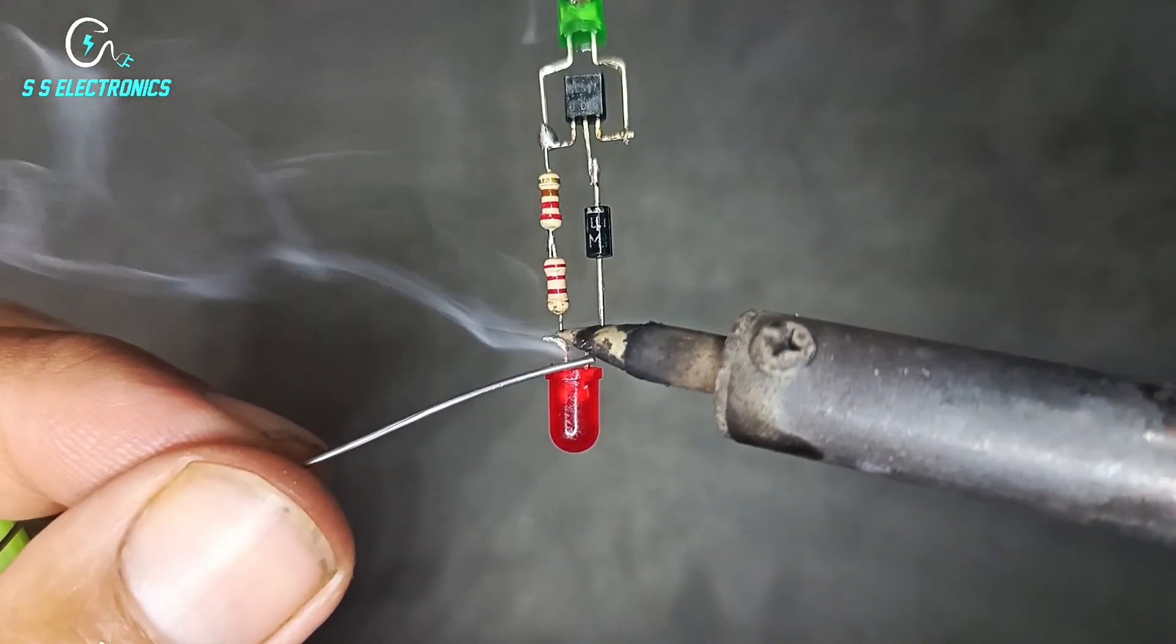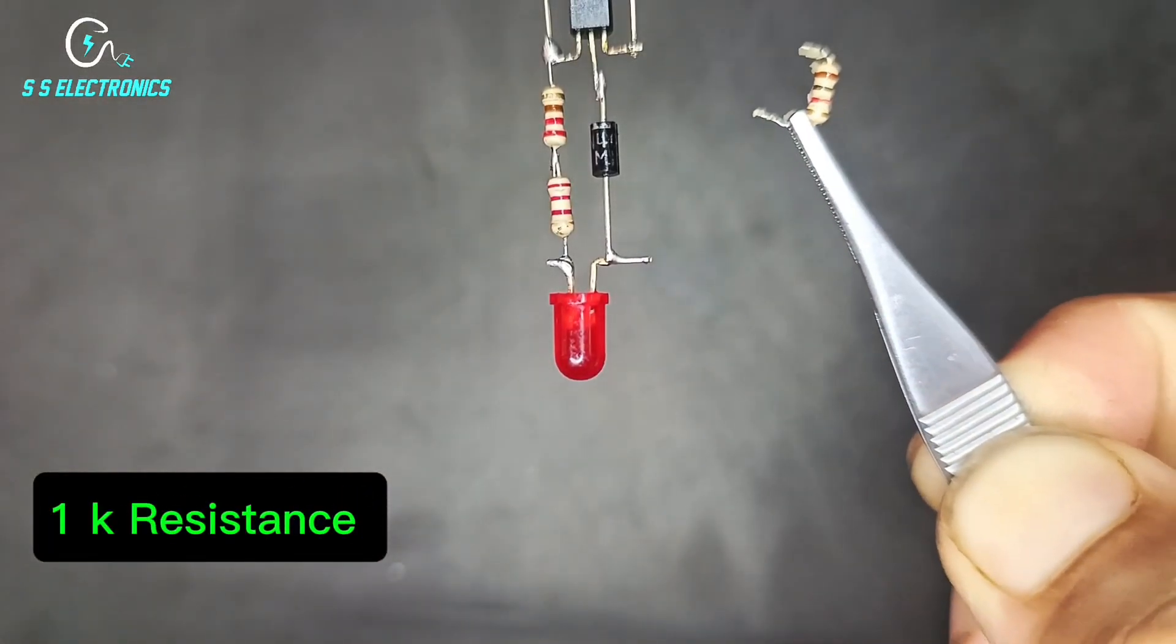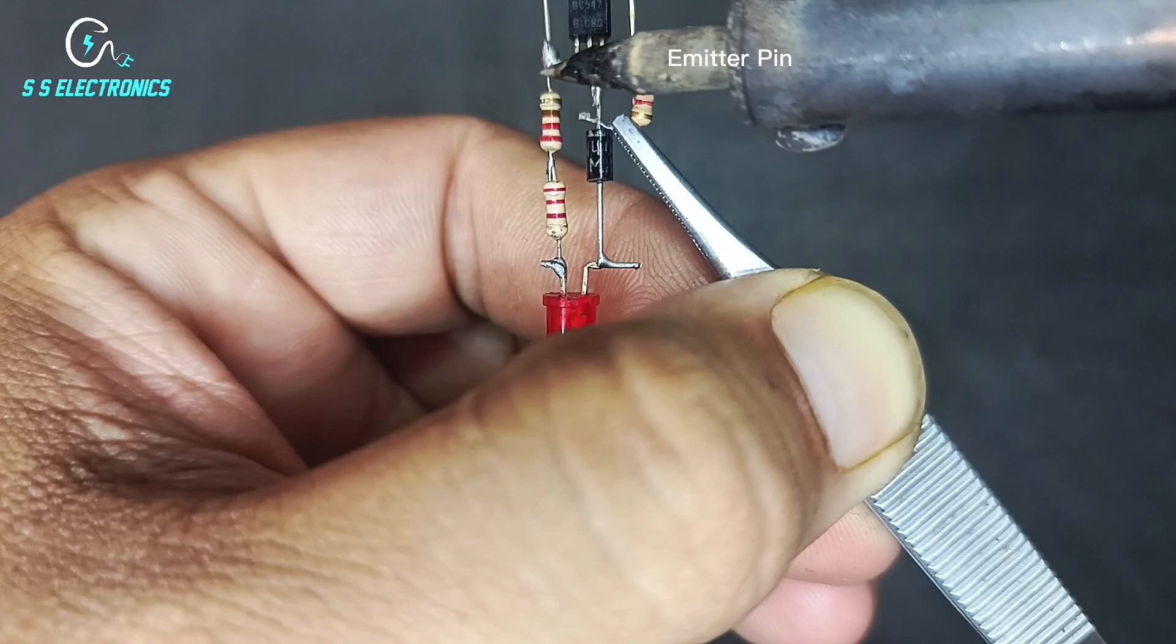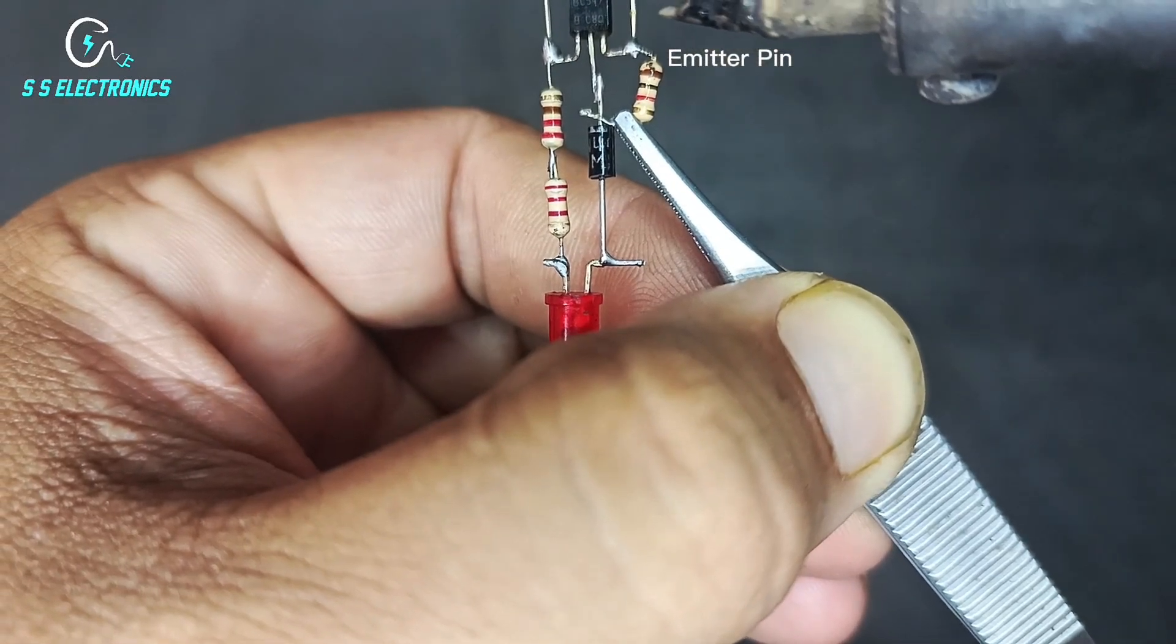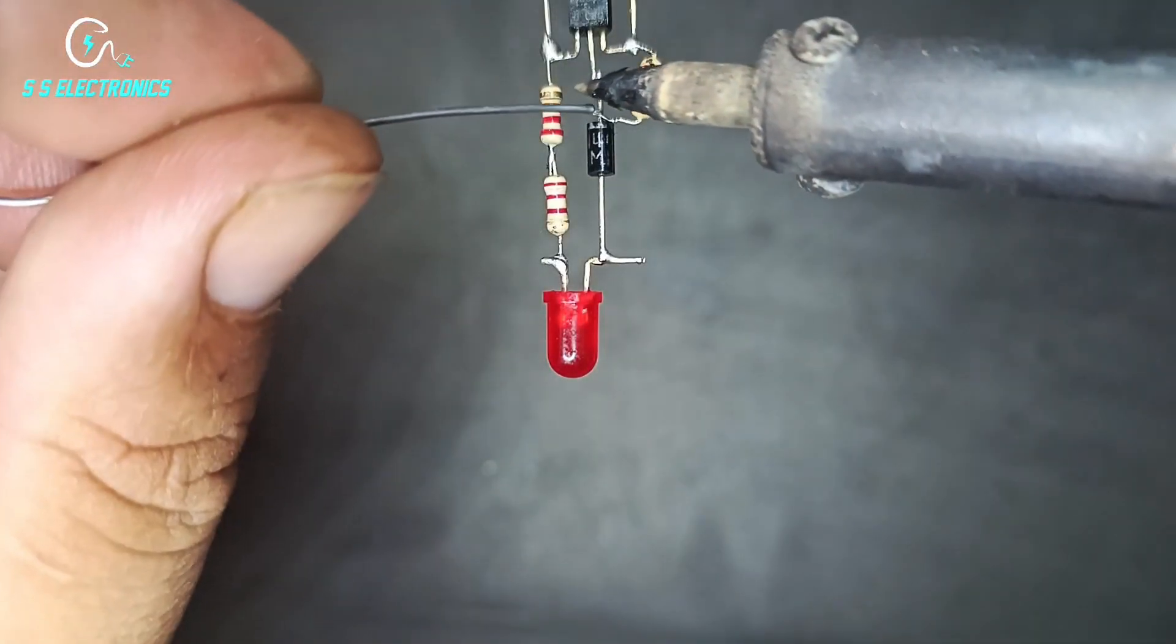4.2k resistance. Diode positive side connecting with LED positive side. 1k resistance. 1k resistance one side connecting with transistor emitter pin and other side connecting with transistor base pin.